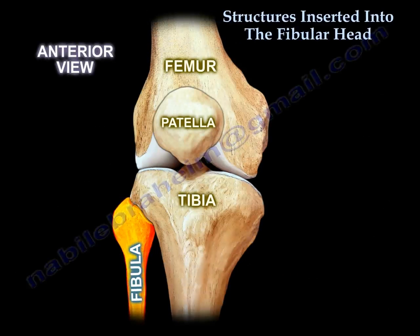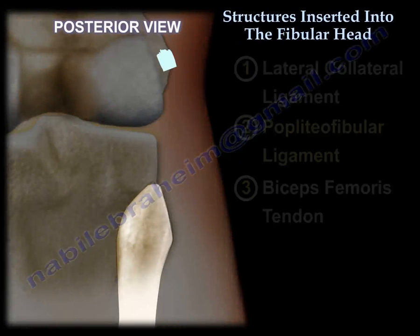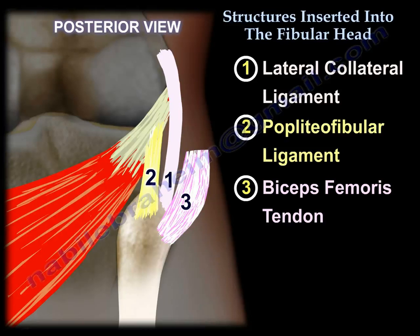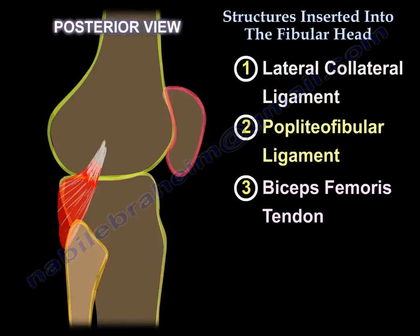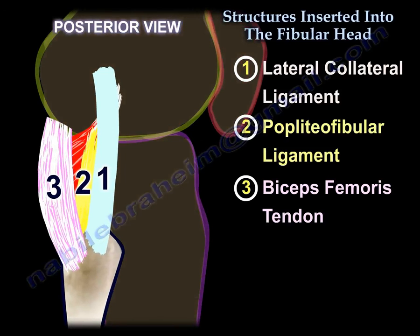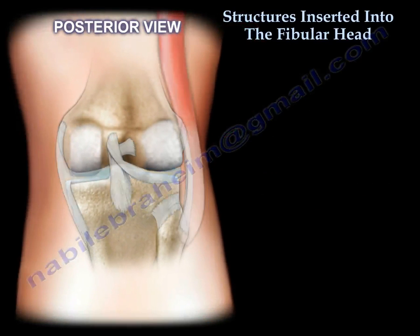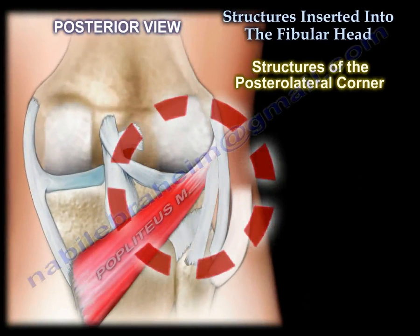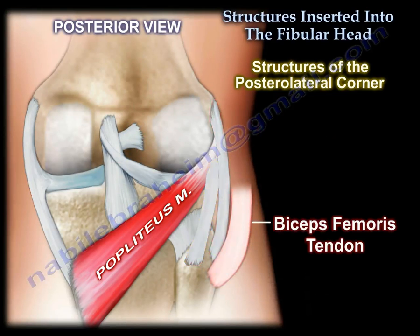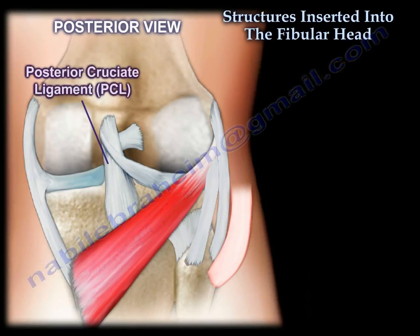Structures inserted into the fibular head. The posterior lateral corner is a hot topic in sports medicine and also in trauma. It is a restraint to external rotation and posterior translation of the tibia in conjunction with the PCL.